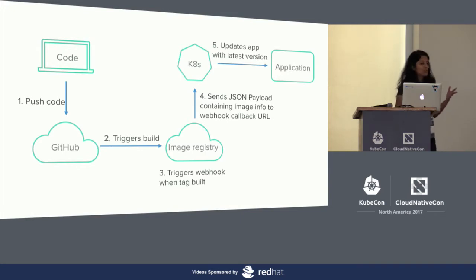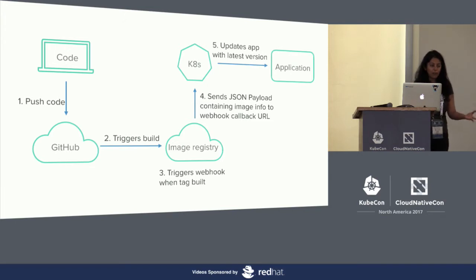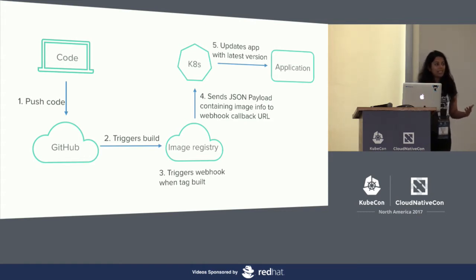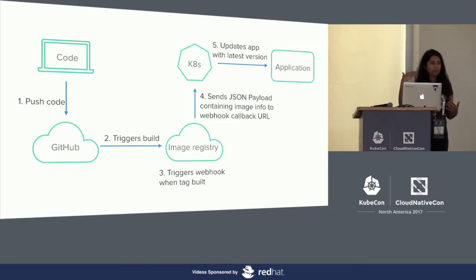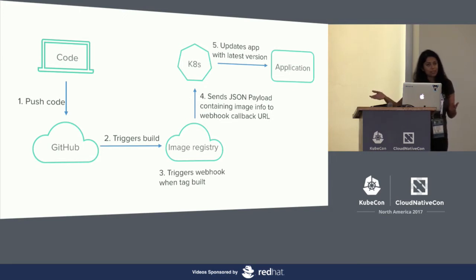The goal of today's talk is to set up a continuous deployment pipeline to your Kubernetes cluster. Say you're running the V1 version of one of your apps on your cluster. Then you made some changes to your code, and now it's time to update your app. Typically it would involve a few steps: you would have to get your code pushed and merged, then build a new version of your code, and once that build is successful, go ahead and update your app in the cluster.